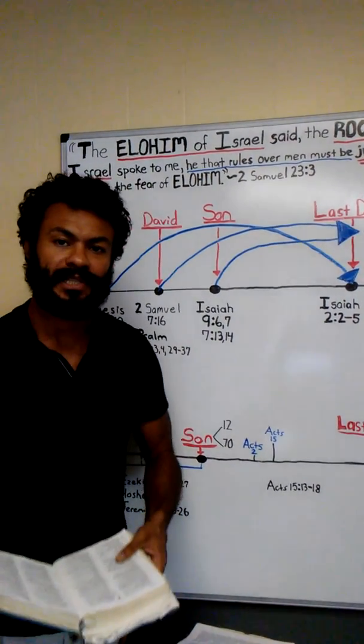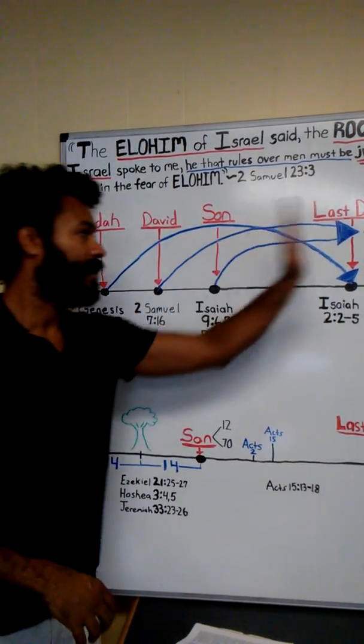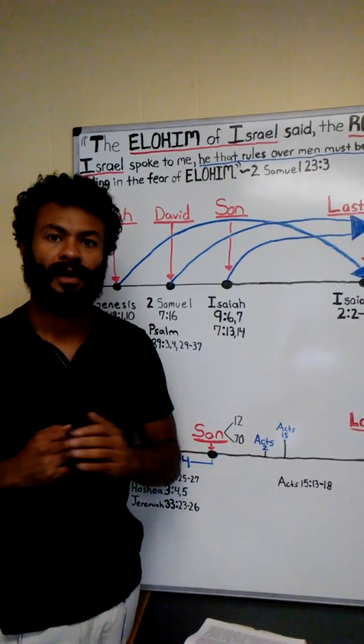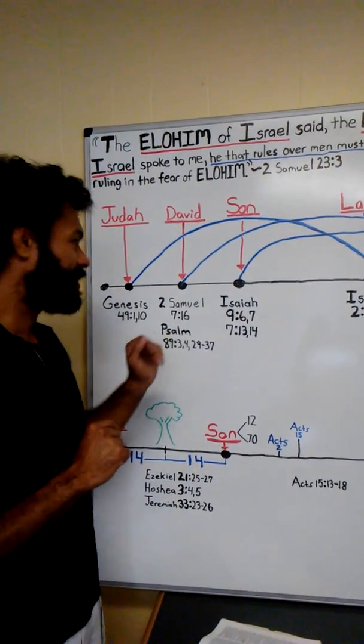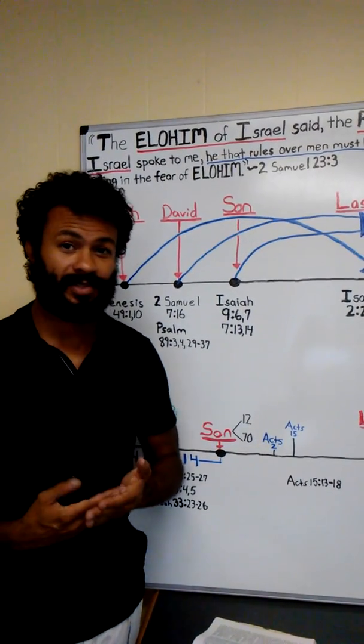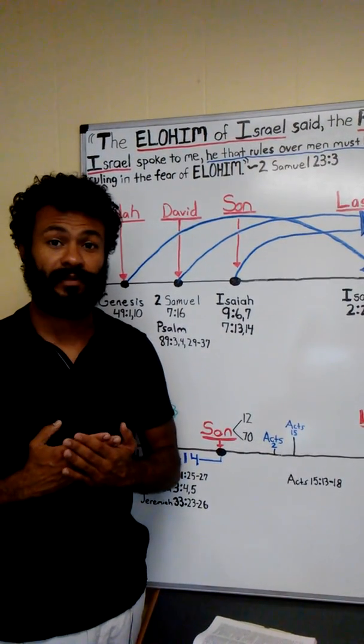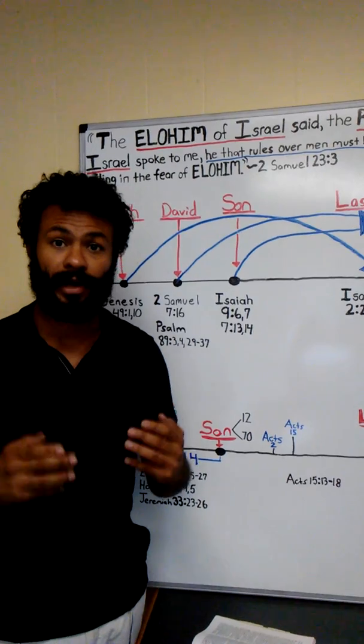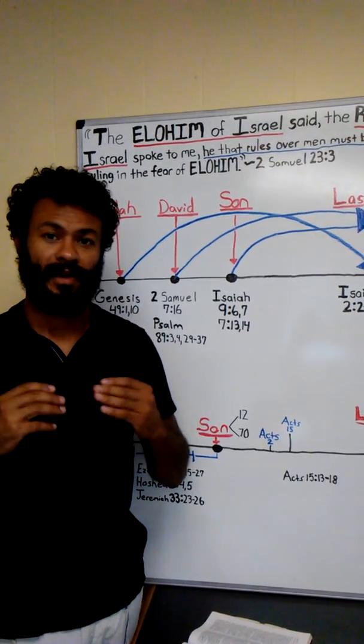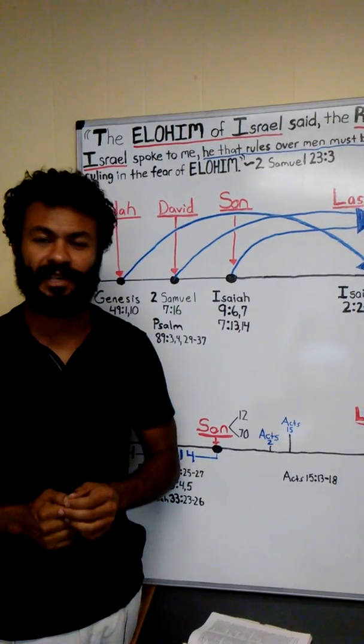This covenant with David is an everlasting covenant. It goes on forever. He's going to establish the throne of David. Even if the children of David rebel against Torah and reject Torah, he was still going to be steadfast to his covenant. This is what happens—they do rebel. There are some very interesting things that happen later on. He says here that he's still going to honor the covenant he has given to David.